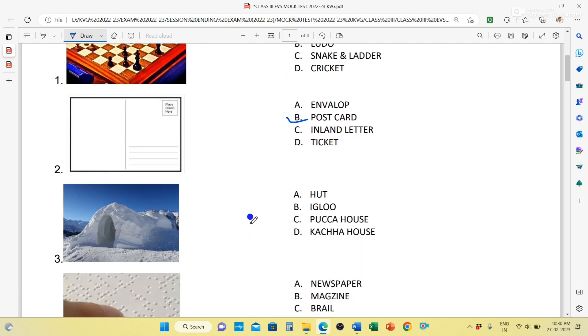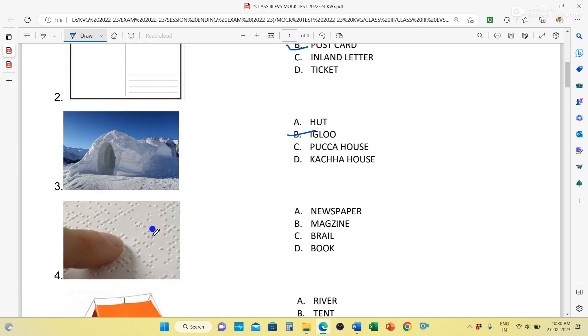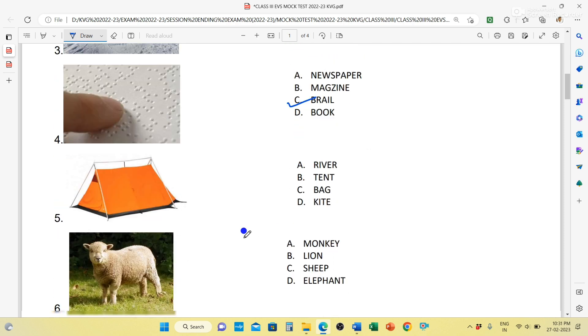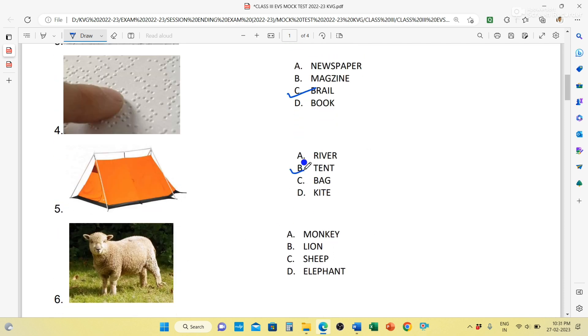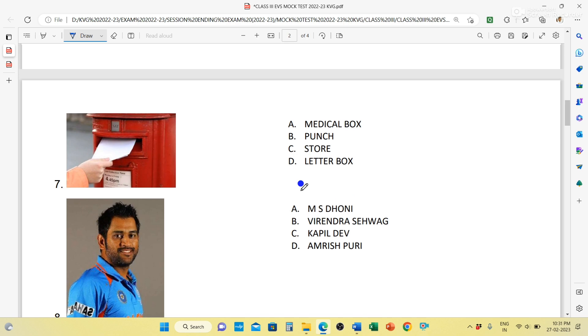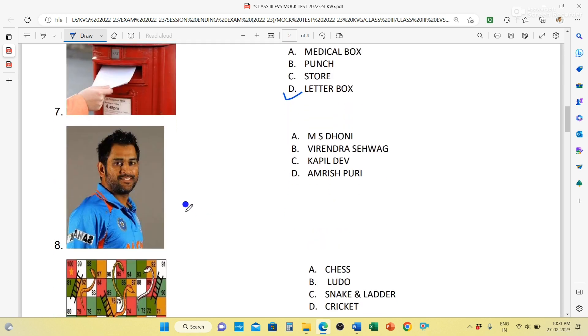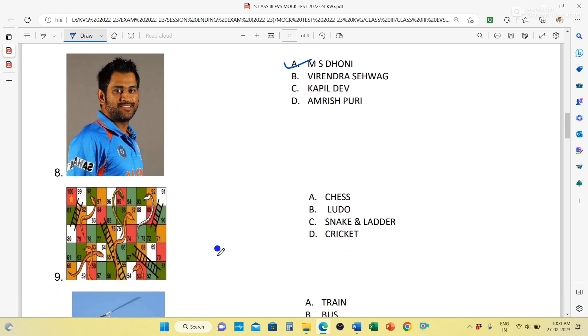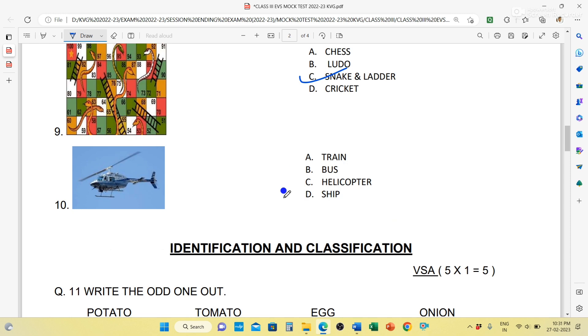Next is the picture of hut, igloo, pucca house, kachcha house. It is your igloo. Next, this is your picture of bell. And the next picture is of tent. The next picture is of sheep. Next picture is of letter box. And the next picture is your MS Dhoni. And next picture is your snake and ladder. And the final picture is of helicopter.